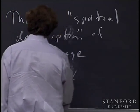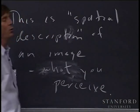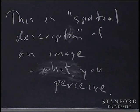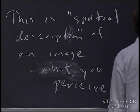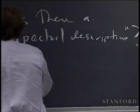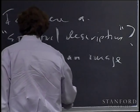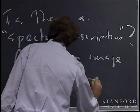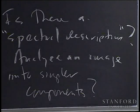The question the Fourier analysis raises is: is there another description? Is there a spectral description? Can you describe an image in terms of its component parts, like you can describe a sound in terms of its component parts? Can you analyze an image into simpler components? And if you can, that gives you a certain amount of control over it — if you can manipulate the component parts, you can manipulate the image, in the same way that manipulating harmonics lets you manipulate a sound.